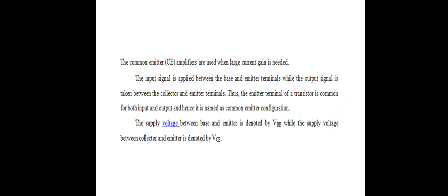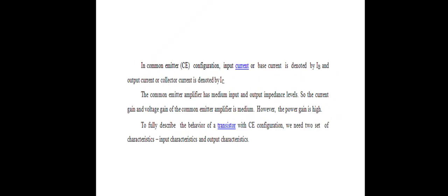The supply voltage between base and emitter is denoted by VBE, while the supply voltage between collector and emitter is denoted by VCE. The input current, or base current, is denoted by IB, and the output current, or collector current, is denoted by IC. The common emitter amplifier has medium input and output impedance levels, so the current gain and voltage gain are medium; however, the power gain is high.